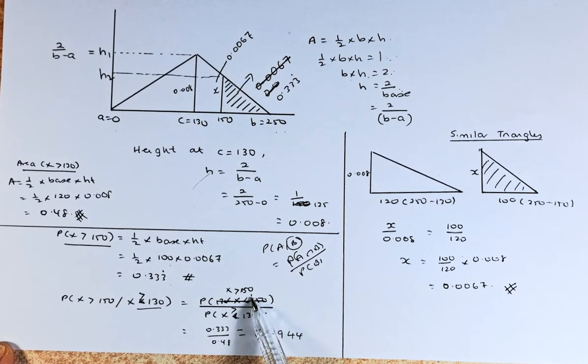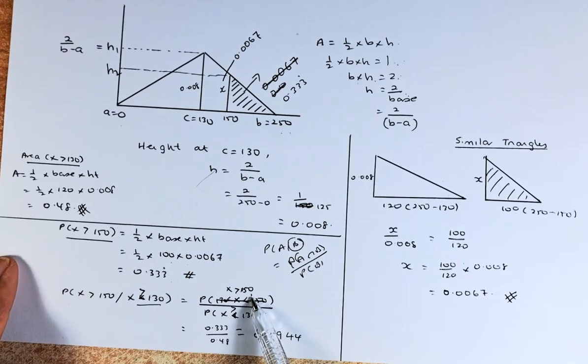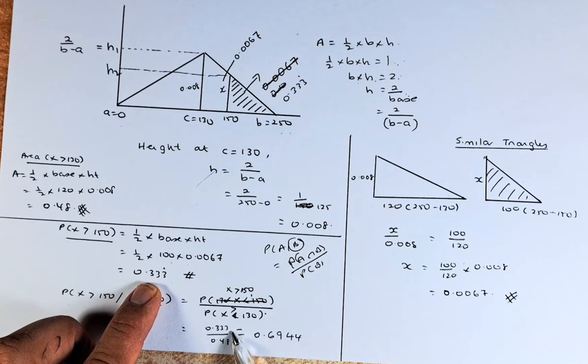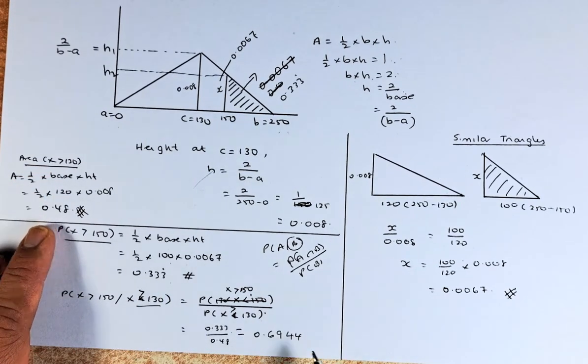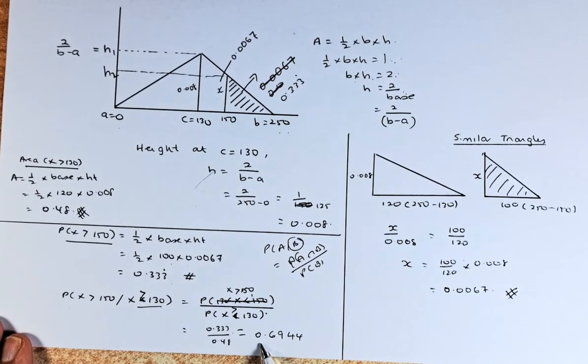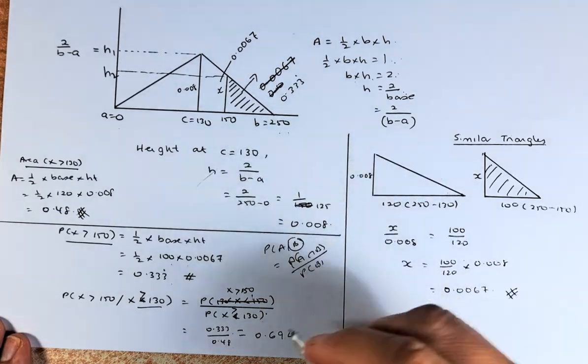More than 150 we found earlier is going to be 0.333, and more than 130 we found to be 0.48. Put it in a calculator and the calculation comes up to 0.6944. If you can answer that, there's a big E in your question.